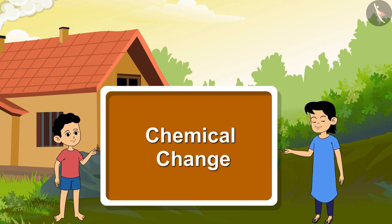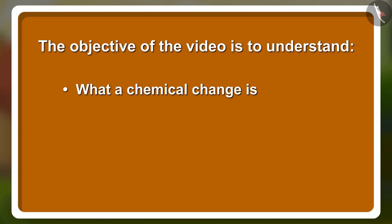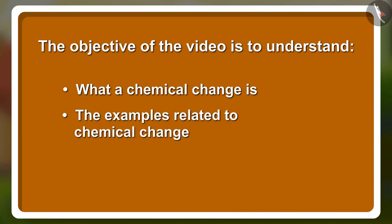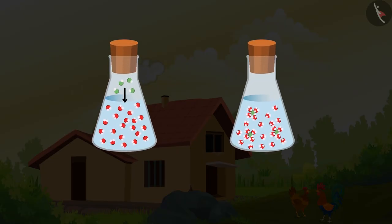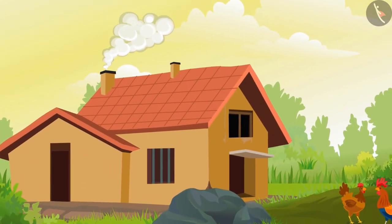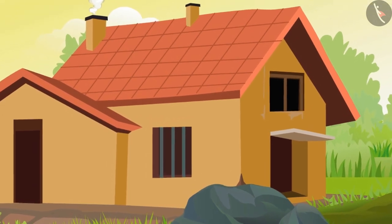The objective of this video is to understand what a chemical change is and look at examples related to chemical change. In the previous video, you understood about physical changes — no new substance is formed in a physical change. Just as we see physical change in our day-to-day life, we also see chemical changes. Let us go back to Rama and Babu and learn about chemical changes.